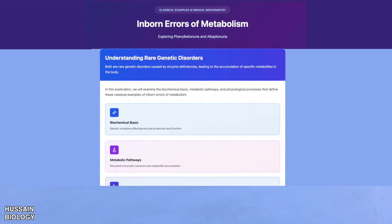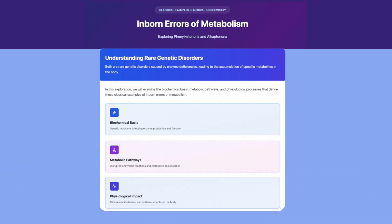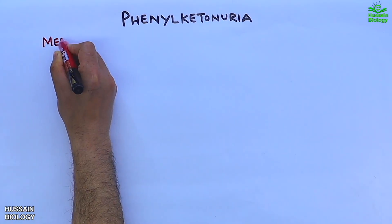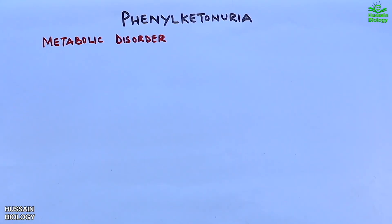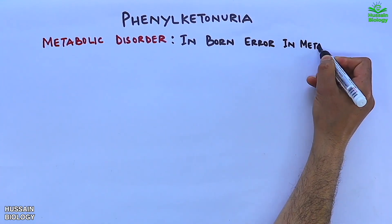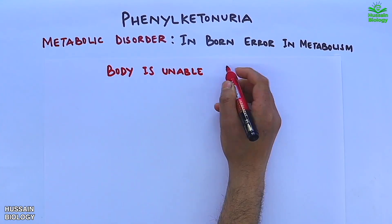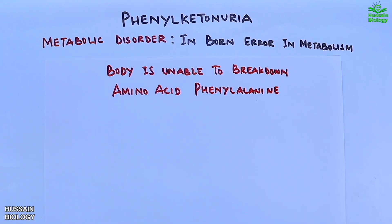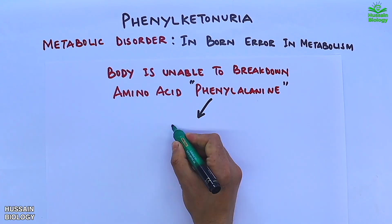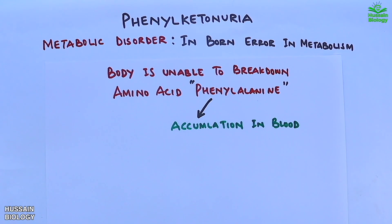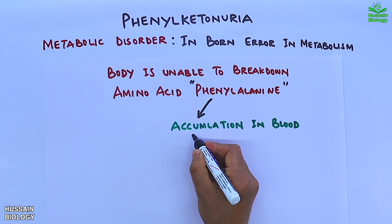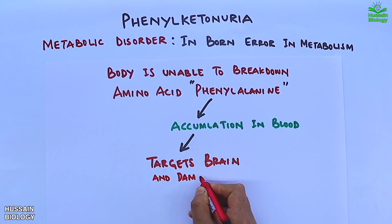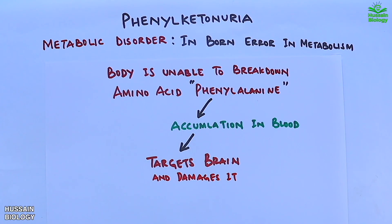We will examine their biochemical basis, pathways, and physiological processes. Let's start with phenylketonuria, which is a metabolic disorder due to an inborn error in metabolism where the body is unable to break down the amino acid phenylalanine, leading to accumulation of phenylalanine in the blood. These elevated abnormal levels of phenylalanine in blood target the brain and damage it.